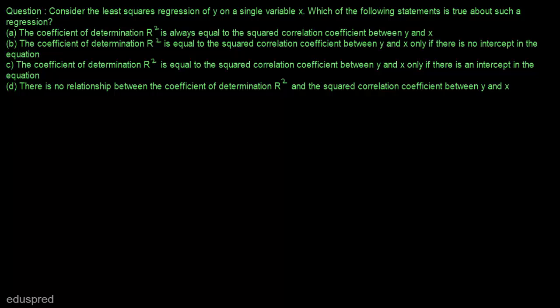In these statements, we are talking about r-square when we have an intercept term in the model and when we do not have an intercept term in the model. This question is really straightforward if you understand the formula to calculate the value of r-square when you have an intercept term and when you do not.